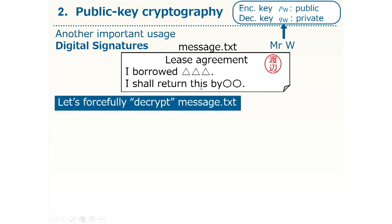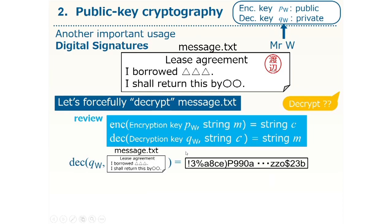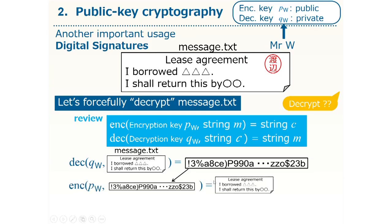Now, I forcefully decrypt this by using my own decryption key, QW. You may be confused to hear this. Recall encryption and decryption: the decryption is an act to restore an encrypted ciphertext to the plaintext or the original message. So the decryption function dec is normally applied to a ciphertext obtained by the encryption function, not a plaintext like this. Anyhow, let's apply this decryption function on the message.txt with my own decryption key. This will produce something — you don't know what will show up. But then, if you apply the encryption function on the obtained string with my encryption key, pw, you will get the original message.